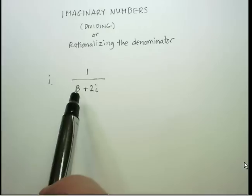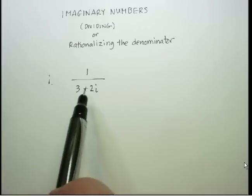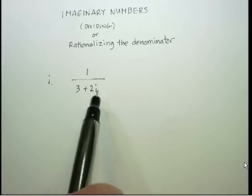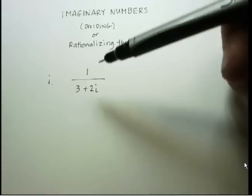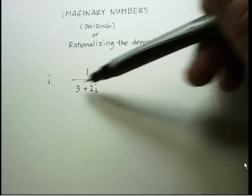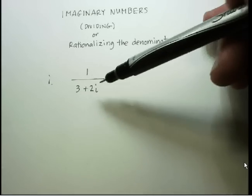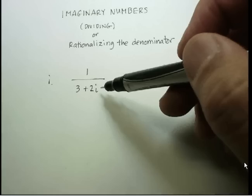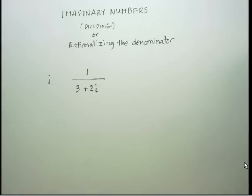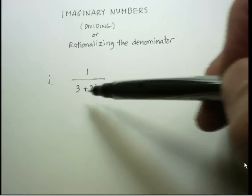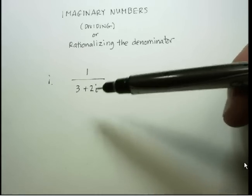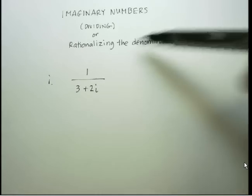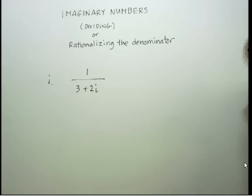In other words, you have some type of a real number plus a real number times the imaginary i. Just like when you have radicals with a binomial radical, you want to multiply by the conjugate. Your final answer should never have an imaginary number in the denominator.